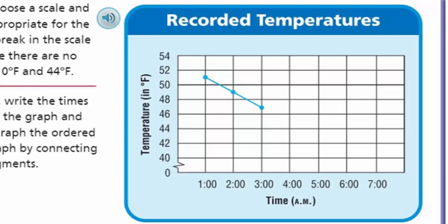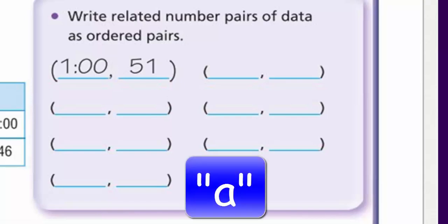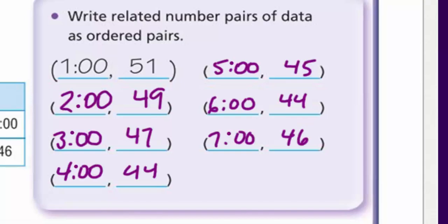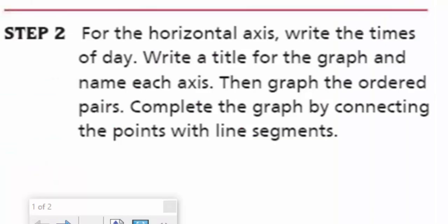I realize I haven't completed our ordered pairs. It says to write related number pairs of data as ordered pairs — let me fill those in quickly. Checking and revising. Now for step two: for the horizontal axis, write the times of day. Also write a title for the graph and name each axis. We've done that — we have 'Time' and 'Temperature.' Now graph the ordered pairs and complete the graph by connecting the points with line segments.